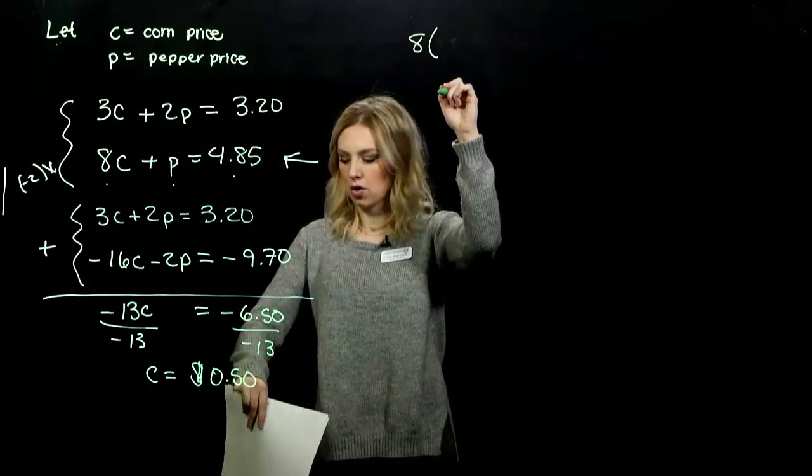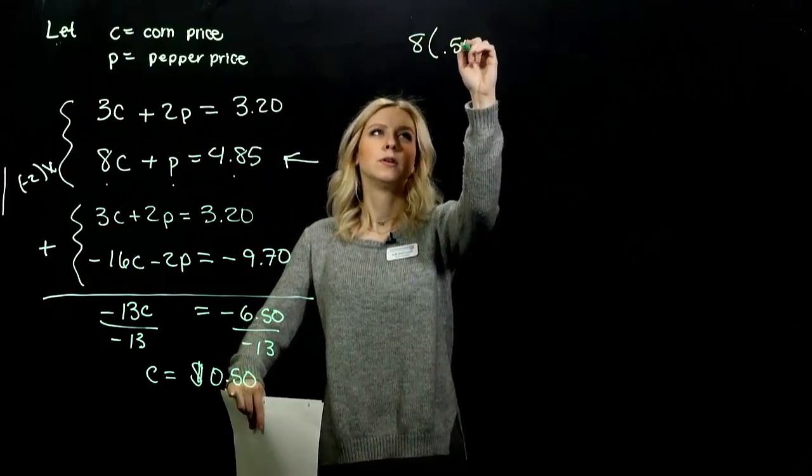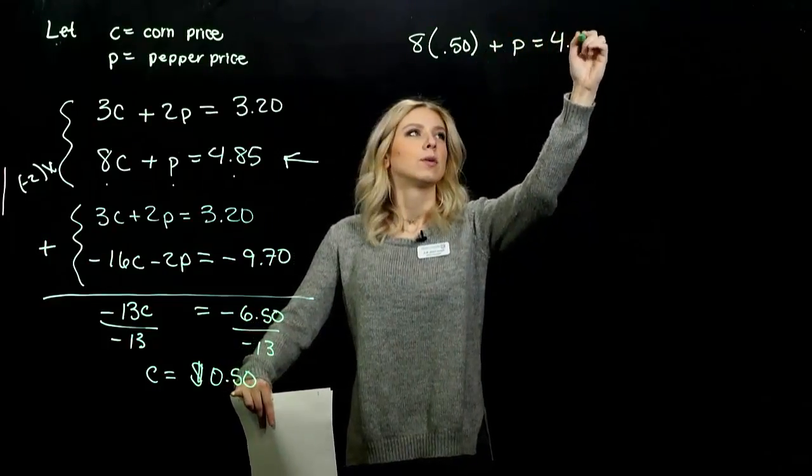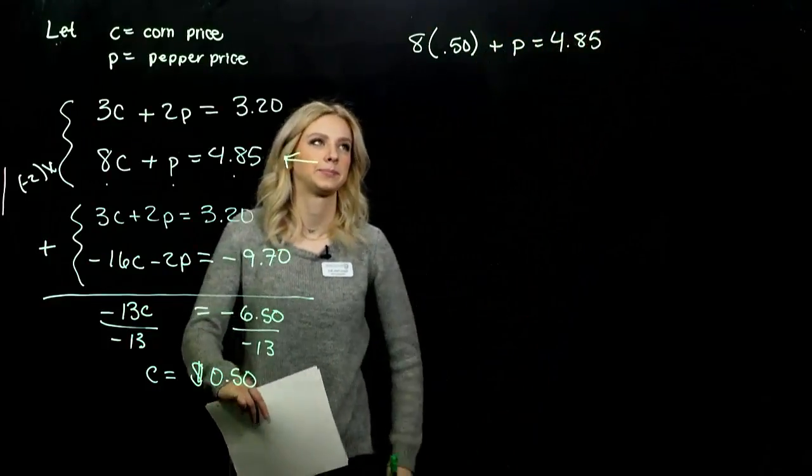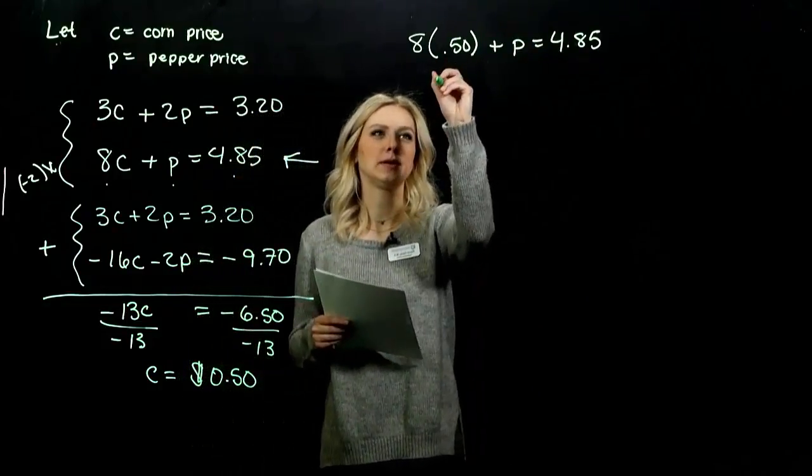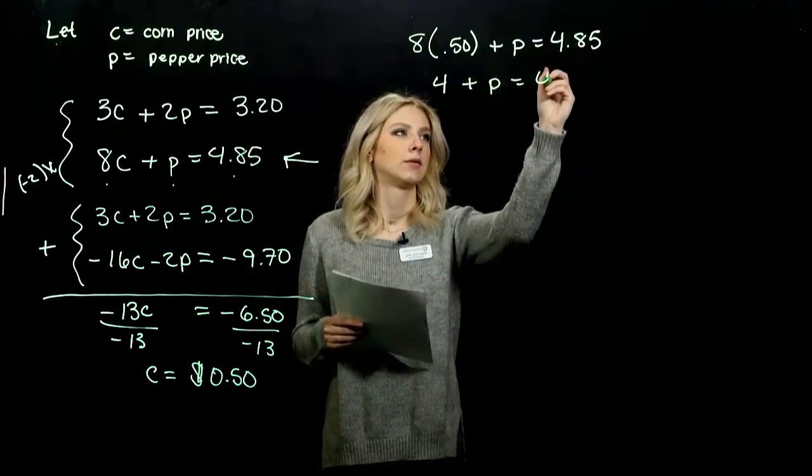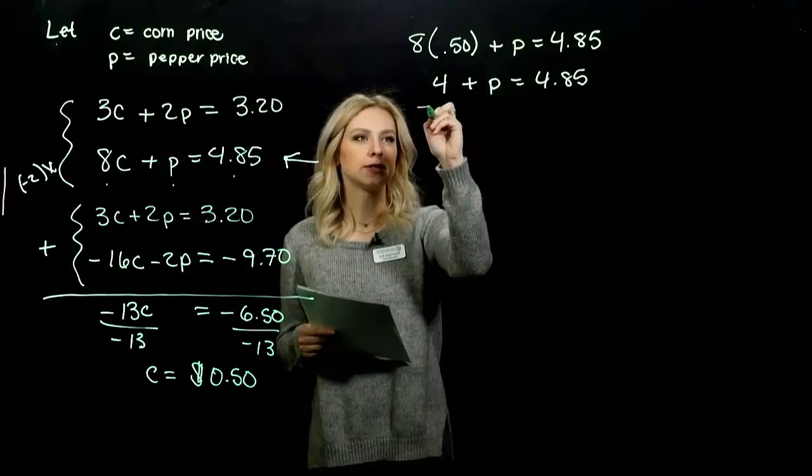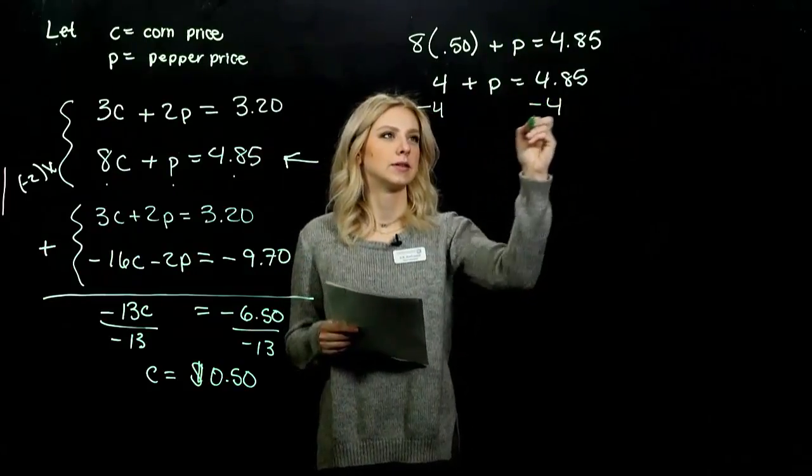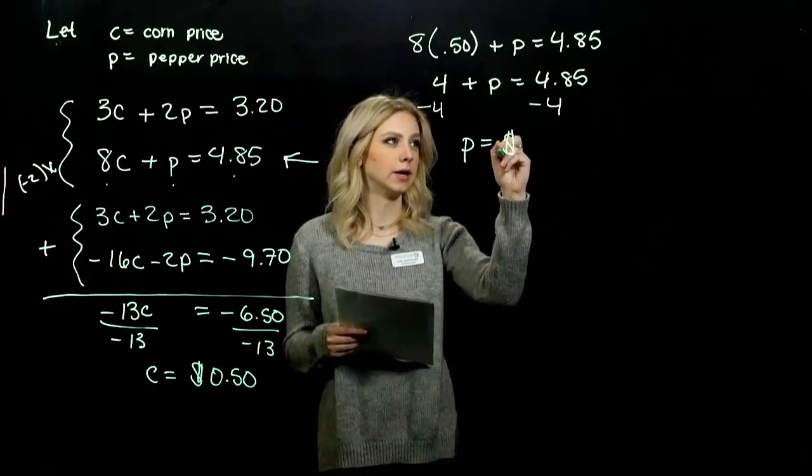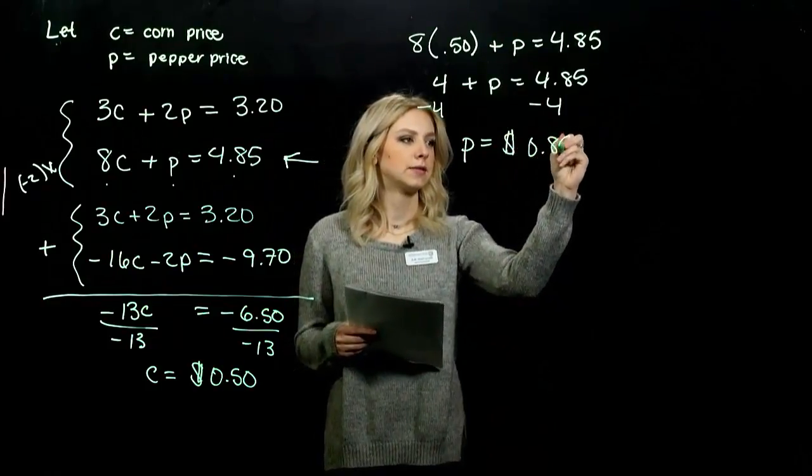Solve it and plug it back in. 8 times what I know C is equivalent to, 50 cents, plus a pepper equals 4.85. So if we multiply 8 times 0.50, we're left with 4.00. So to get P on its own, we need to subtract 4 from both sides. So the price of a pepper, we want to put the units on there, is 85 cents.